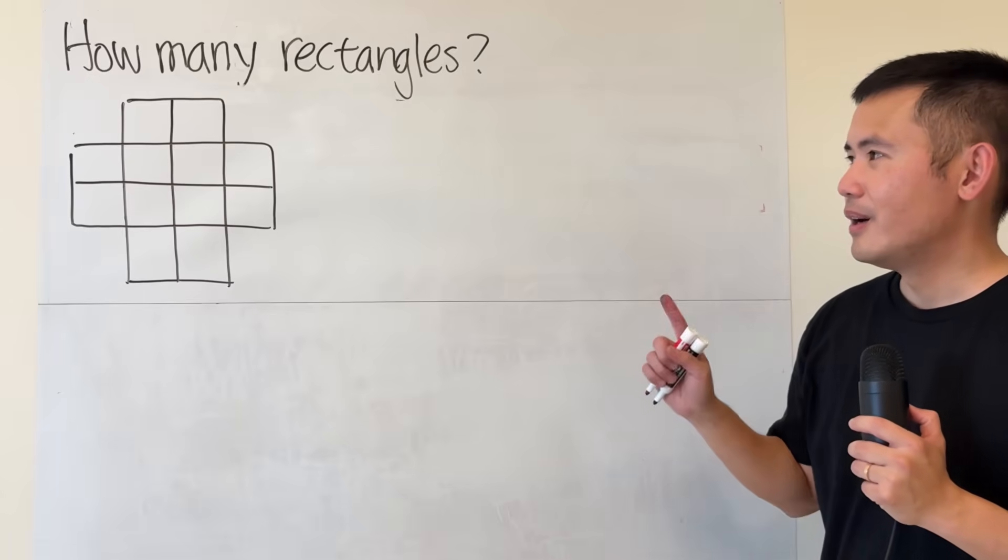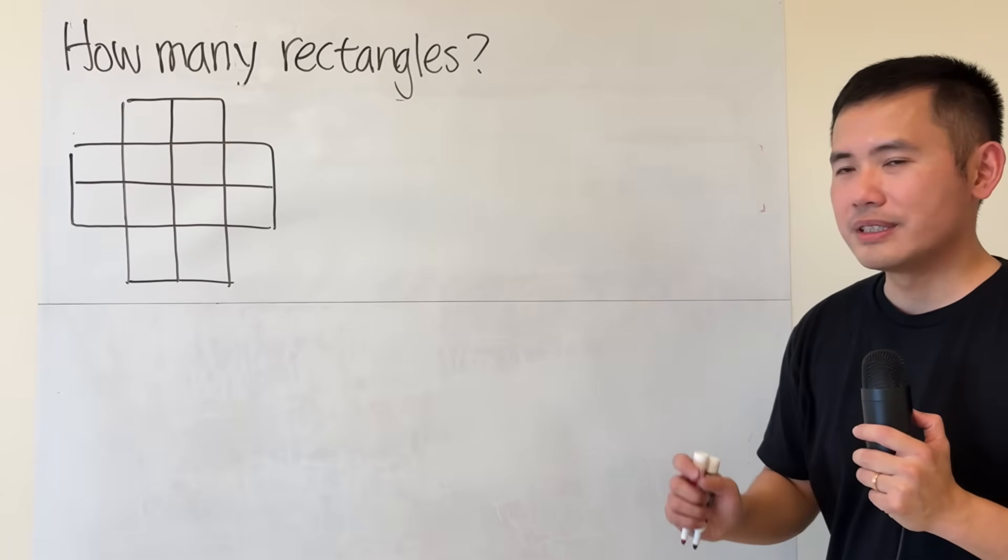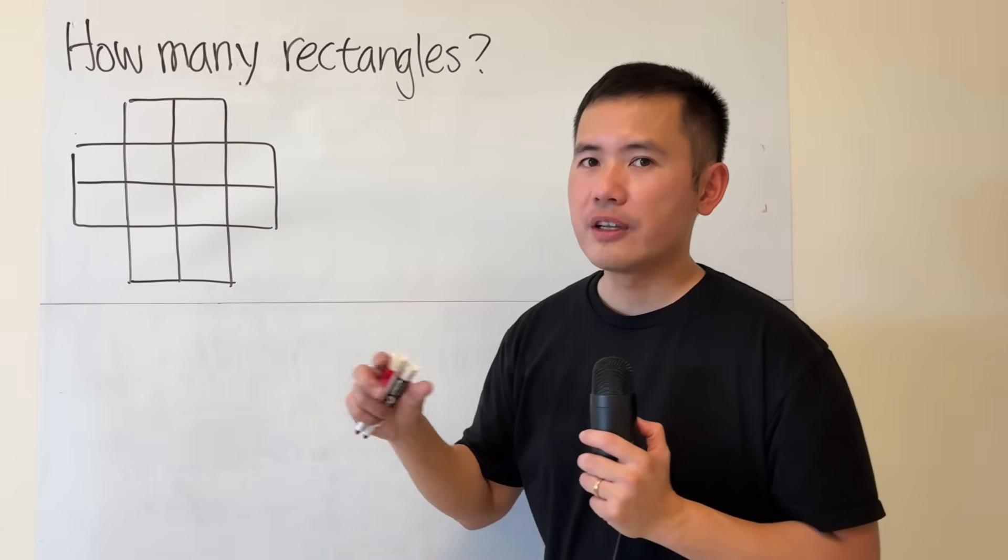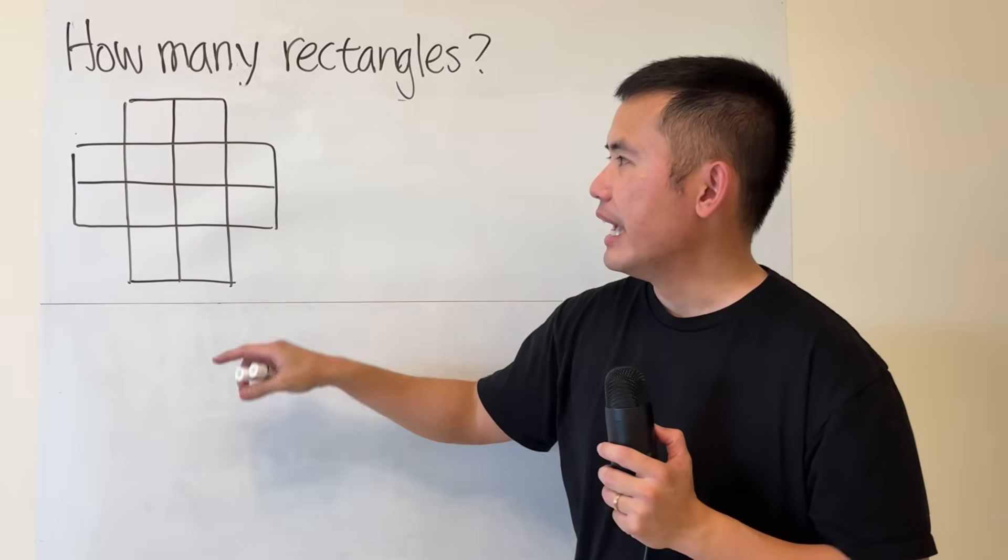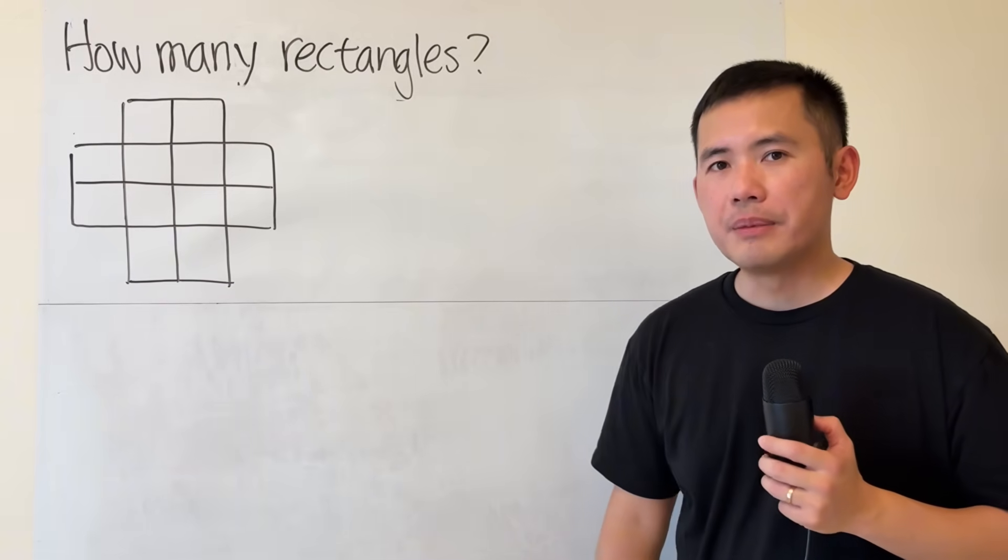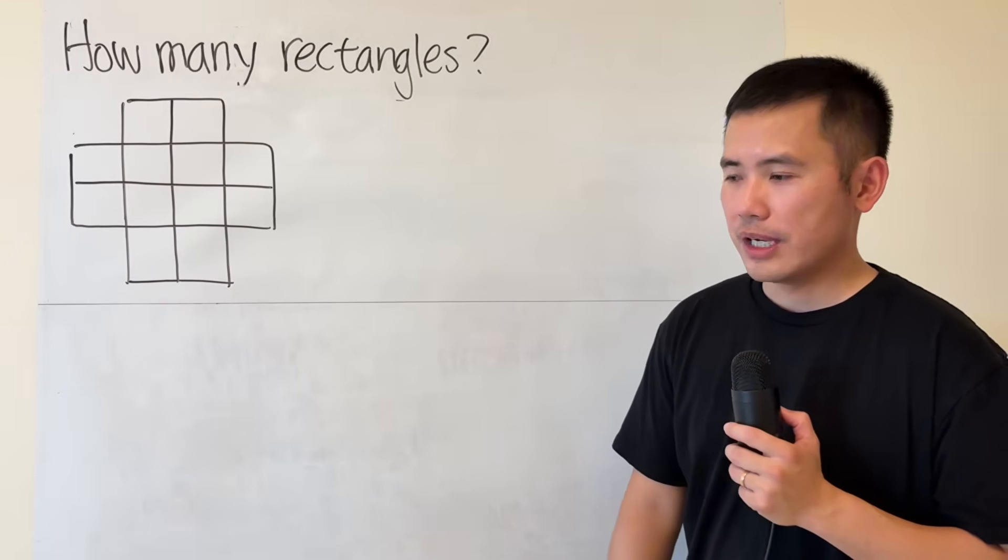Done? Okay. Originally, I was thinking about just draw a big square and then figure out the number of rectangles inside and then subtract 1, 2, 3, 4. But that's actually not correct. And you can leave a comment down below and let me know why that isn't correct.